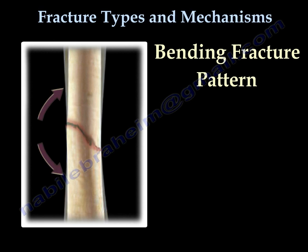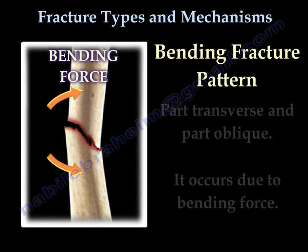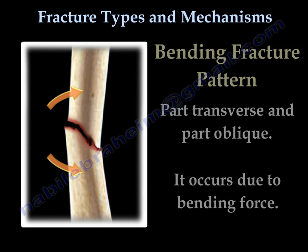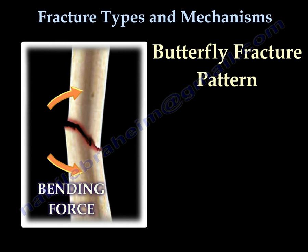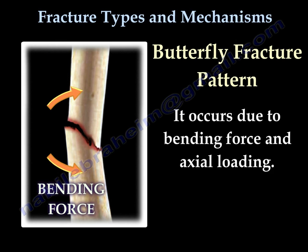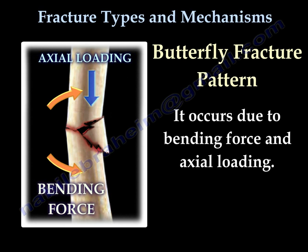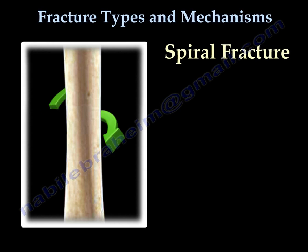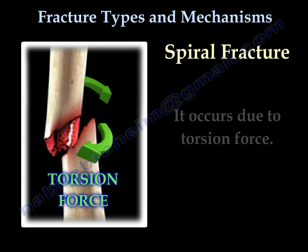A bending fracture pattern is part transverse and part oblique, and it occurs due to bending force. A butterfly fracture pattern occurs due to bending force and axial loading. The spiral fracture type occurs due to torsion force.